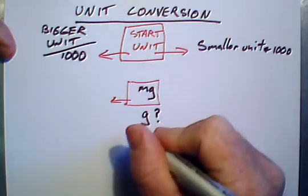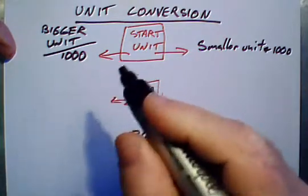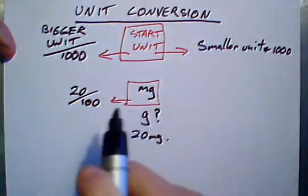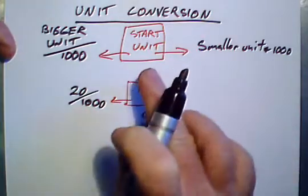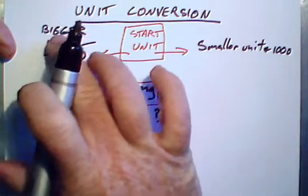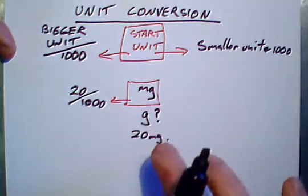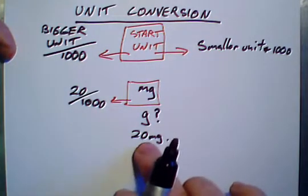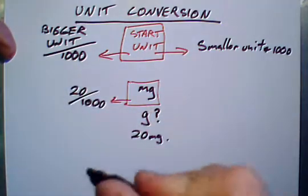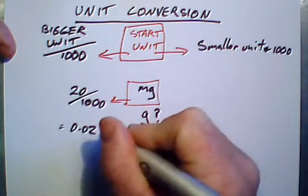If we have, let's say we have 20 milligrams, and we now go and put that 20 over 1,000. Because what we're after is converting to the bigger unit, so we divide by 1,000. So going from milligrams to grams, 20 milligrams, we're going to put that as 20 over 1,000, equals 0.02 grams.